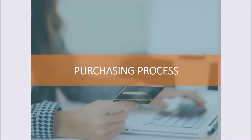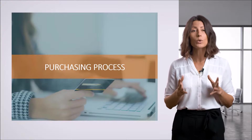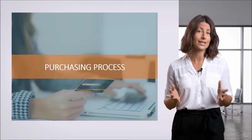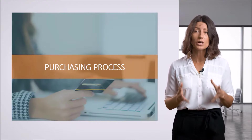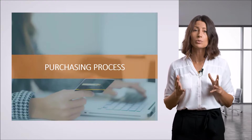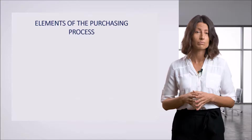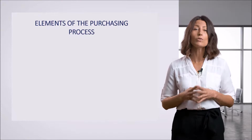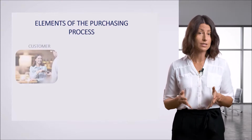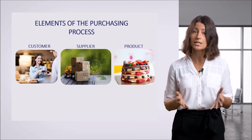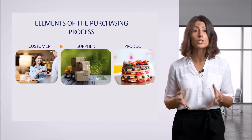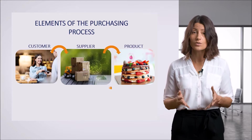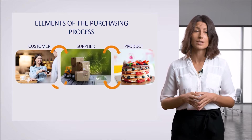Let's take a closer look at what the purchasing process actually is. In doing this, we must ask: what is it? Do we all go through this process? Is the professional purchasing process different from the main procurement activities in a company? There are three main elements of the purchasing process: customer, supplier, and material or non-material product, such as a service. The relationship between the customer, the supplier, and ourselves is the key to the purchasing process.